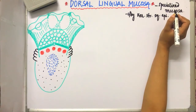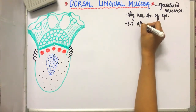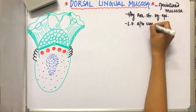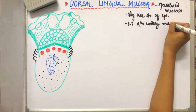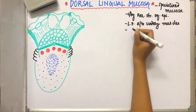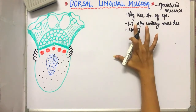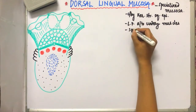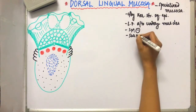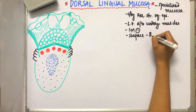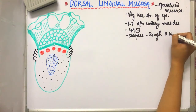Its lamina propria is attached to the underlying muscles. Since the lamina propria is attached to the muscle, it is clear that the sub-mucosa is absent here. The surface of the dorsal lingual mucosa is rough and irregular.